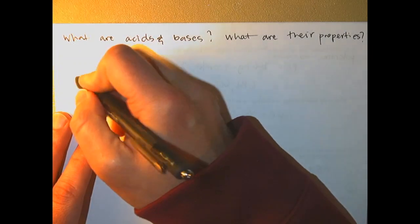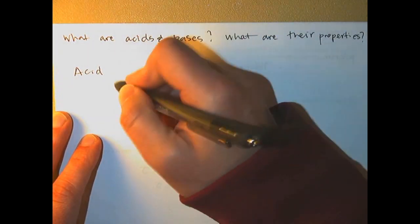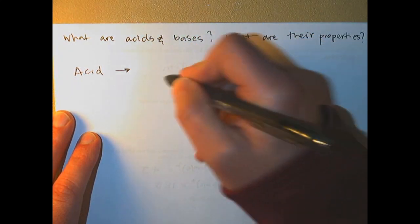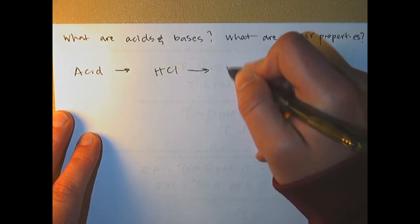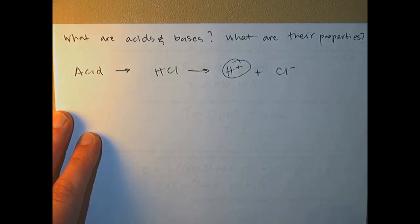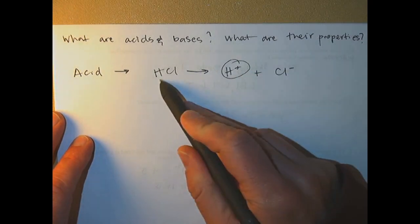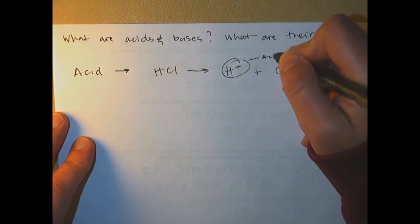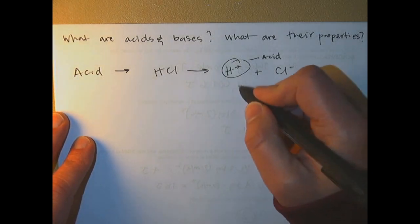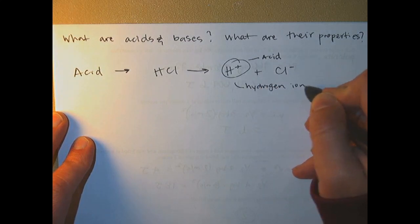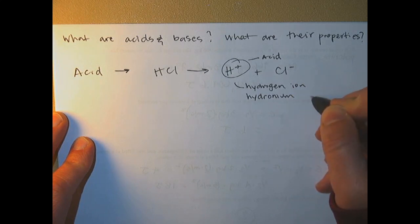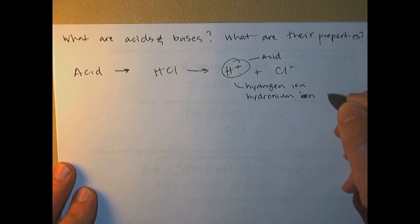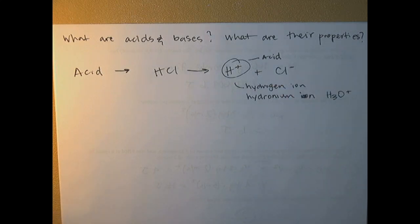On paper, you already know you can identify an acid by having an H in the formula. What we mean is that when it breaks apart — like HCl in water — it breaks apart into H+ and Cl-, and having H+ in water is what makes an acid an acid. So having the H+ is what makes an acid an acid. This is usually called either the hydrogen ion or hydronium ion, and sometimes it's written as H3O+, but they all mean the same thing.